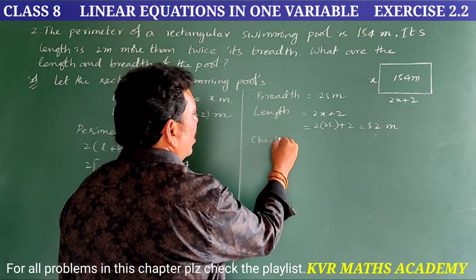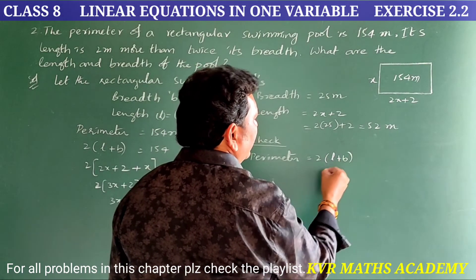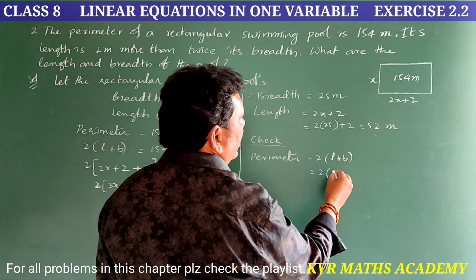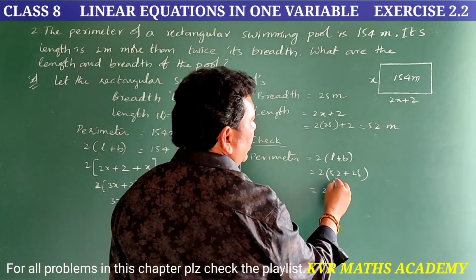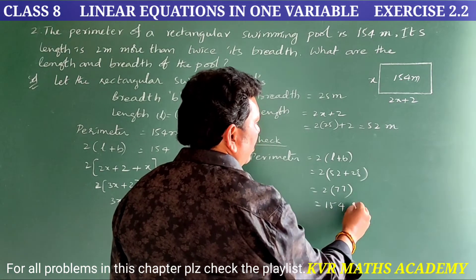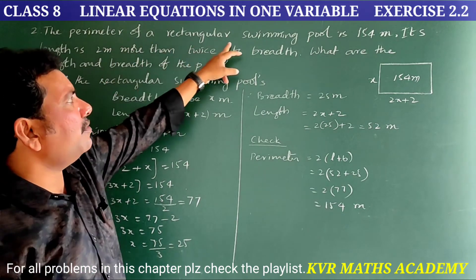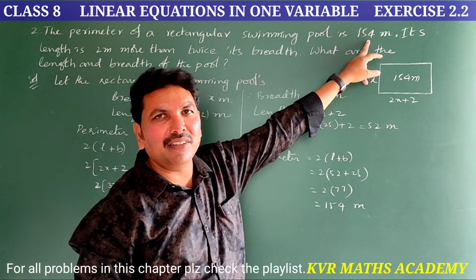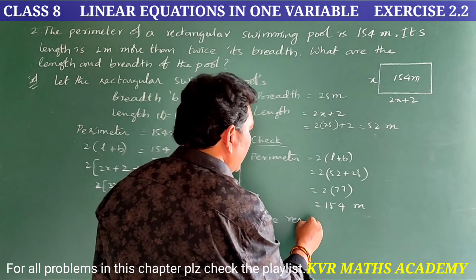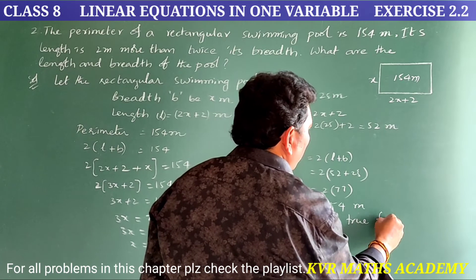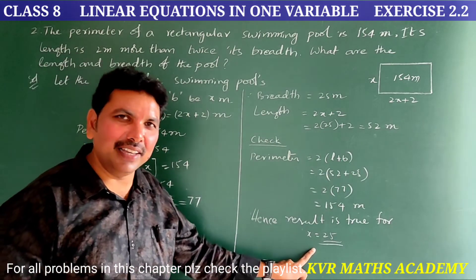Let us check. Perimeter = 2(L + B) = 2(52 + 25) = 2 × 77 = 154 meters. This matches the given perimeter of 154 meters. Hence the result is true for x = 25.